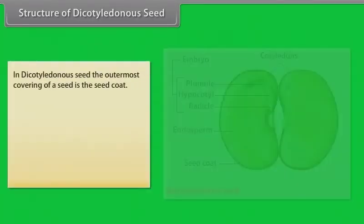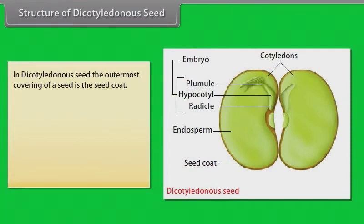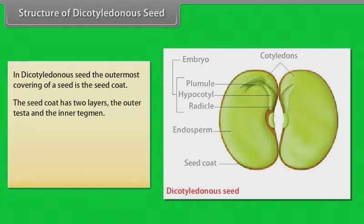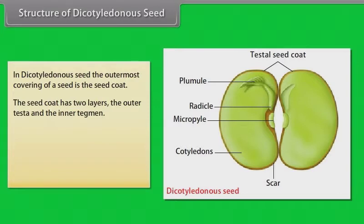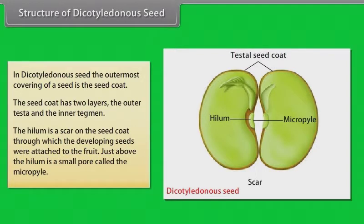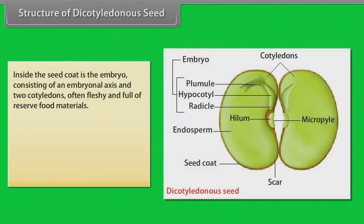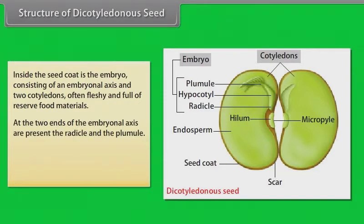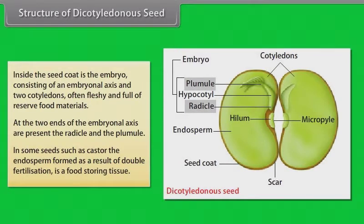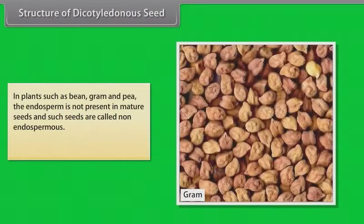In a dicotyledonous seed, the outermost covering is the seed coat, which has two layers: the outer testa and the inner tegmen. The hilum is a scar on the seed coat through which the developing seeds were attached to the fruit; just above the hilum is a small pore called the micropyle. Inside the seed coat is the embryo, consisting of an embryonal axis and two cotyledons, often fleshy and full of reserved food materials. At the two ends of the embryonal axis are the radicle and the plumule. In some seeds such as castor, the endosperm formed as a result of double fertilization is a food-storing tissue. In plants such as bean, gram and pea, the endosperm is not present in mature seeds, and such seeds are called non-endospermous.